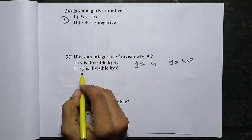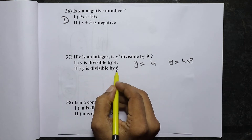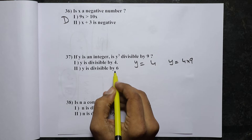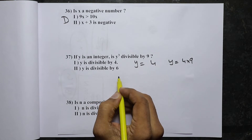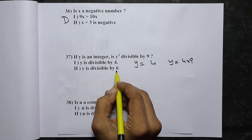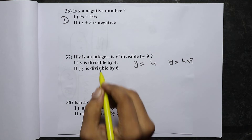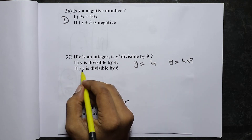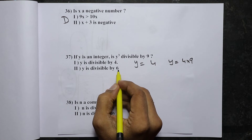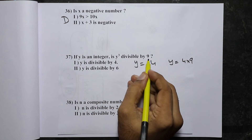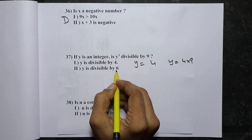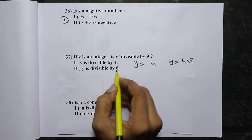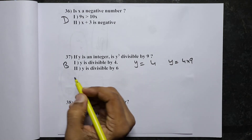Look at the second statement: y is divisible by 6. If y is divisible by 6, then y must be divisible by both 2 and 3. Since y is divisible by 3, y cubed must be divisible by 9. So the second statement clearly tells you yes, y cubed will be divisible by 9. Hence B is the right answer.